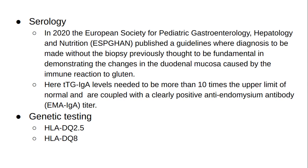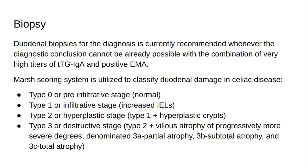In 2020, the European Society for Pediatric Gastroenterology, Hepatology, and Nutrition (ESPGHAN) published guidelines where diagnosis can be made without biopsy — previously thought to be fundamental in demonstrating changes in the duodenal mucosa caused by the immune reaction to gluten. Here, TTG-IgA levels need to be more than 10 times the upper limit of normal and are coupled with a positive anti-endomysium antibody (EMA-IgA) titer. For genetic testing, HLA-DQ2.5 and HLA-DQ8 are assessed. Duodenal biopsies by esophagogastroduodenoscopy (EGD) are currently recommended whenever the diagnostic conclusion cannot be reached with the combination of very high titers of TTG-IgA and positive EMA.